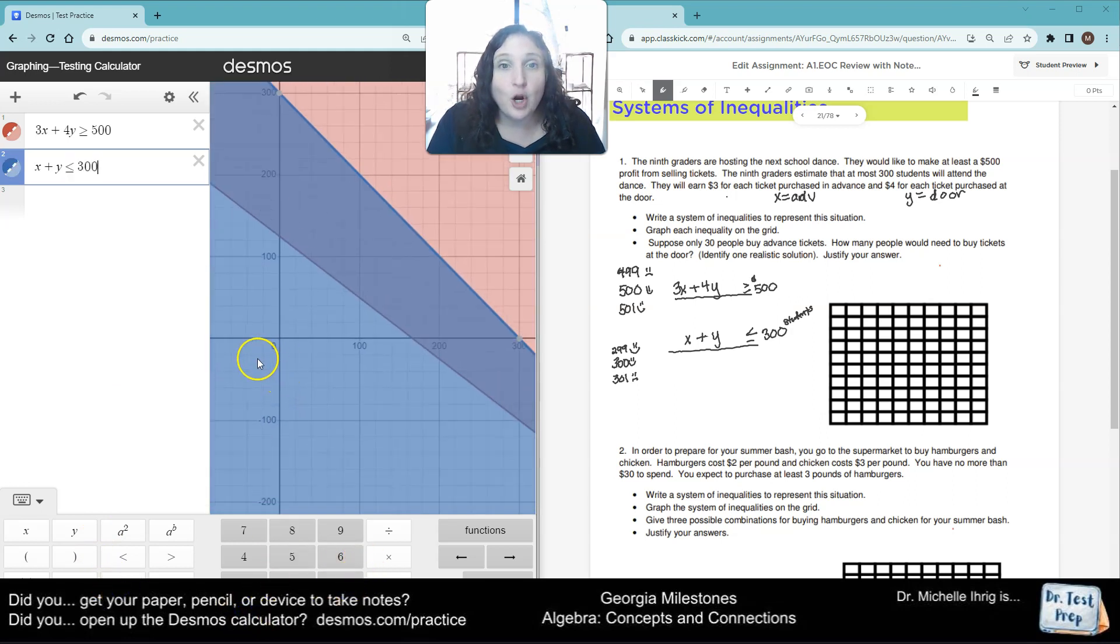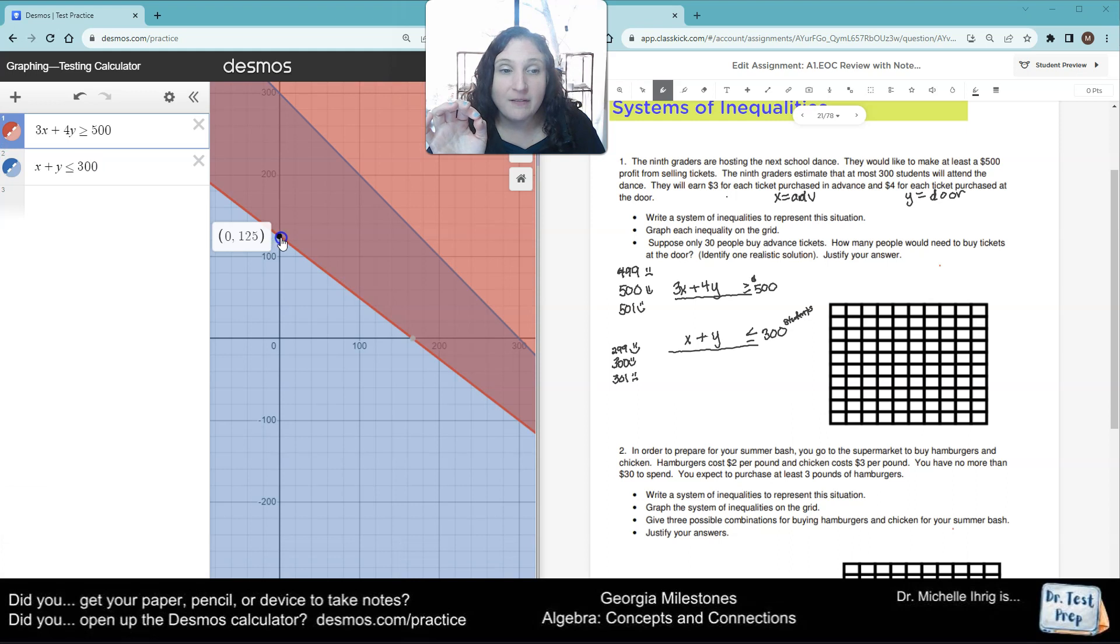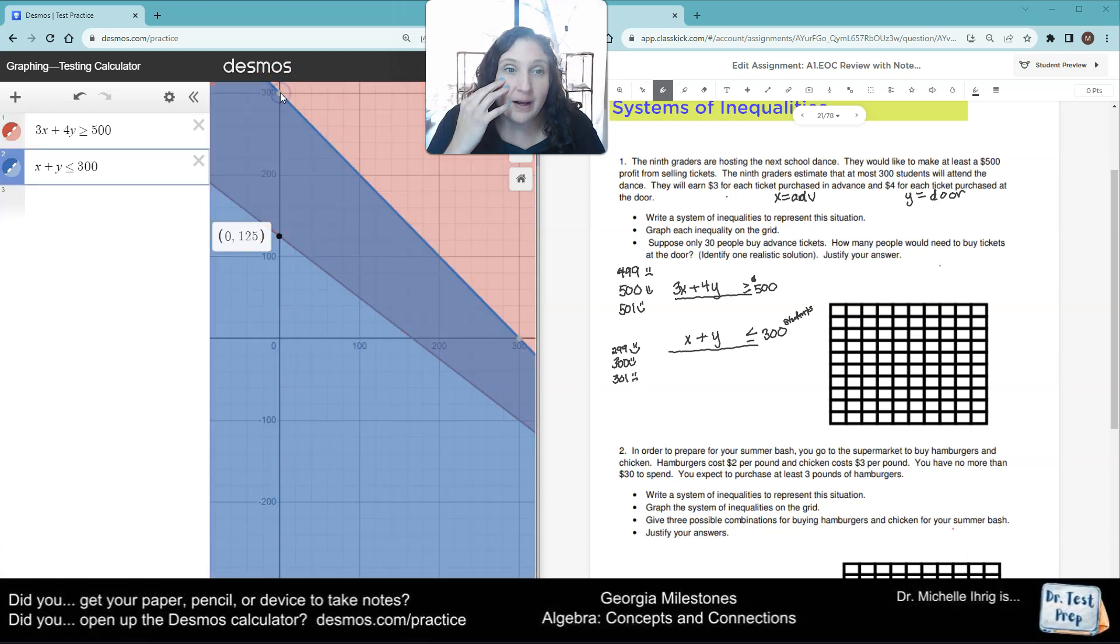And remember our overlap is correct. The overlap is the true part. So here I could have zero people and 125 all the way up to the 300. So it's got to be in the overlap. And it can be on the solid line because it's solid. If it was not or equal to, it'd be dotted and then we couldn't count that.